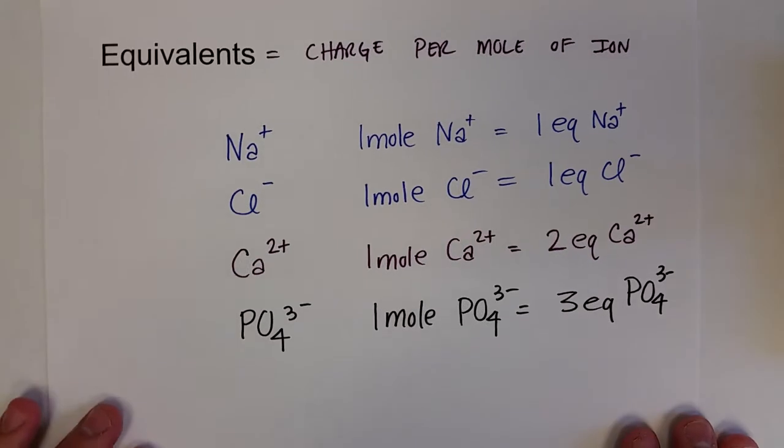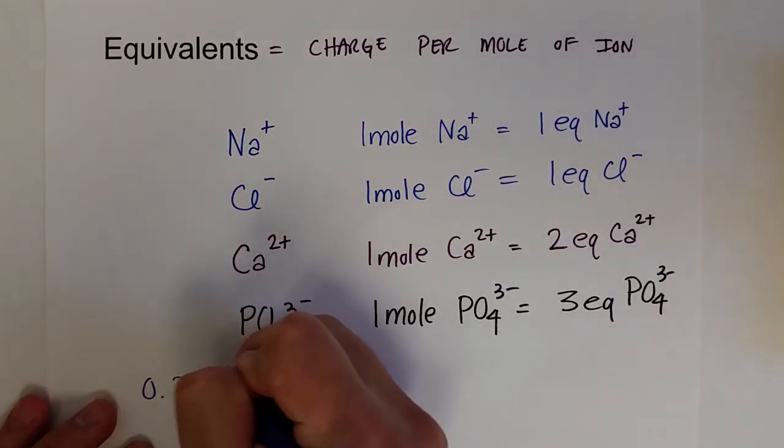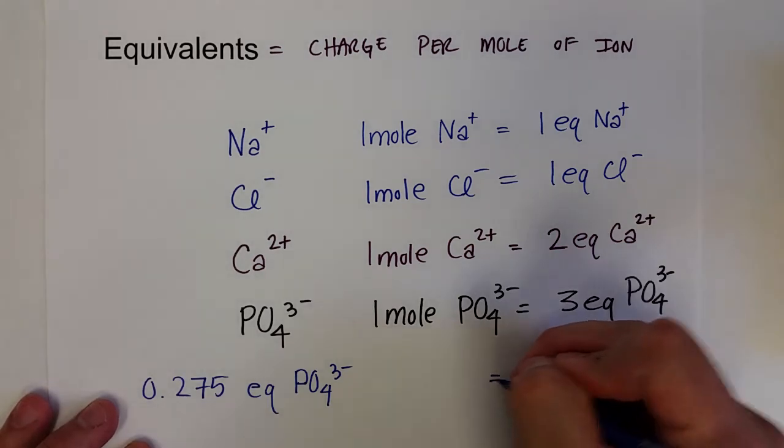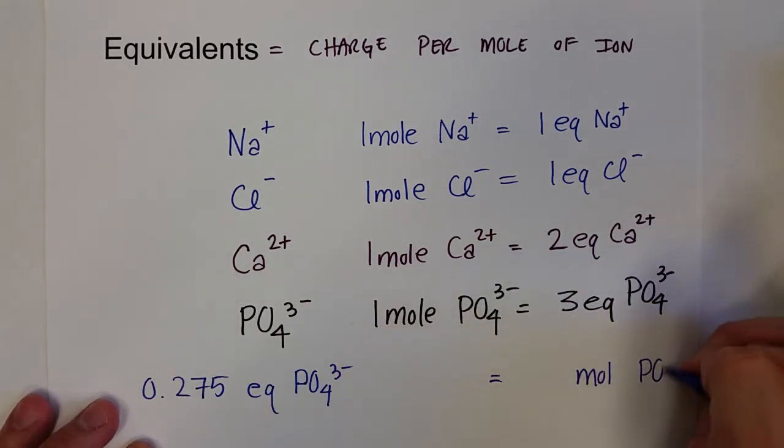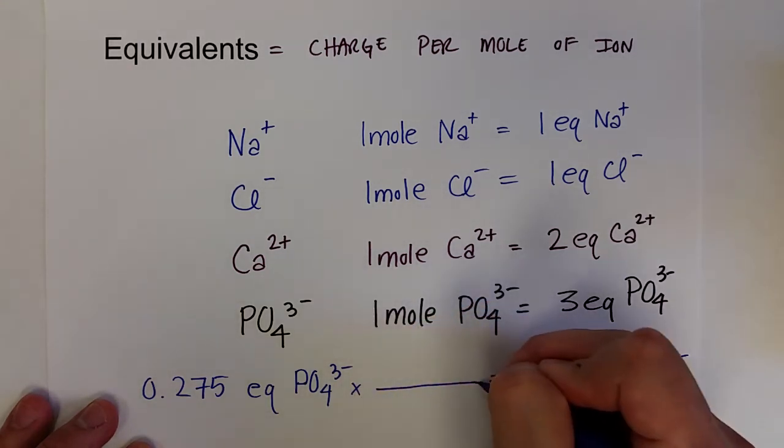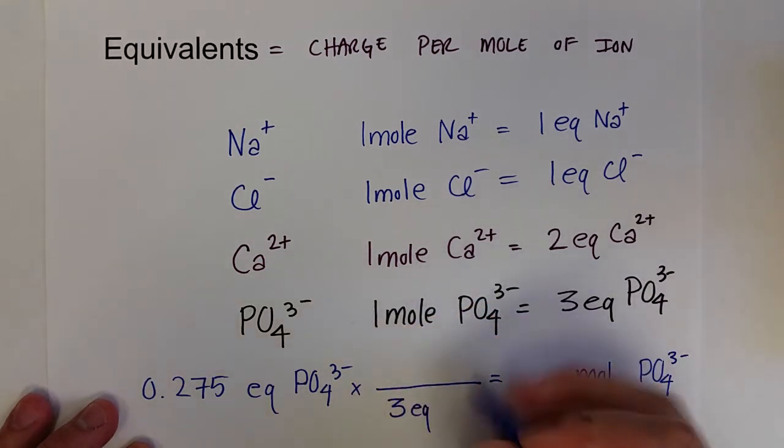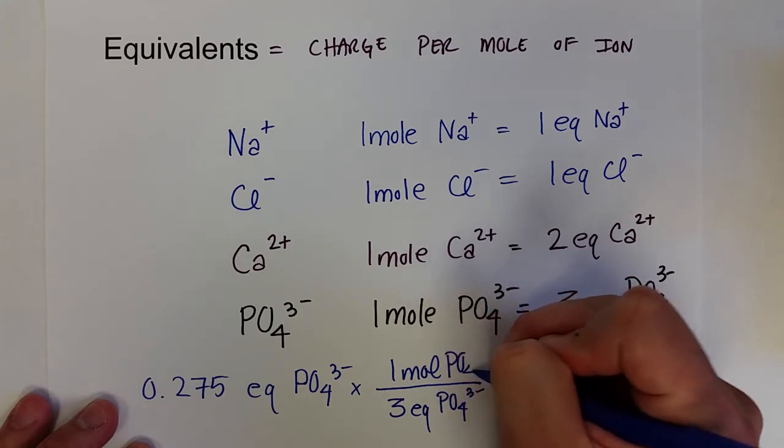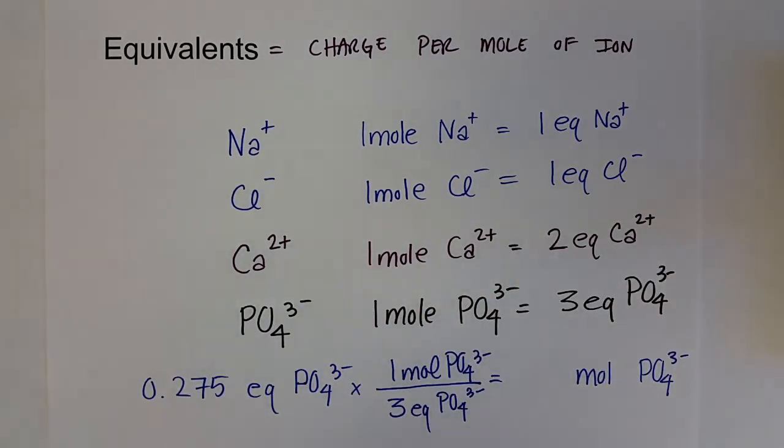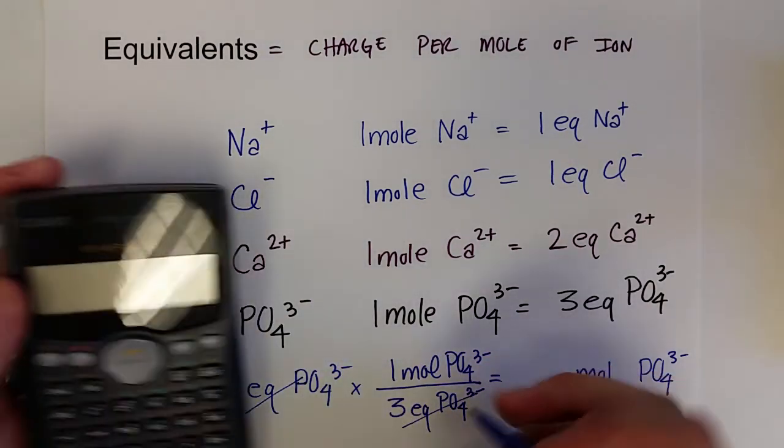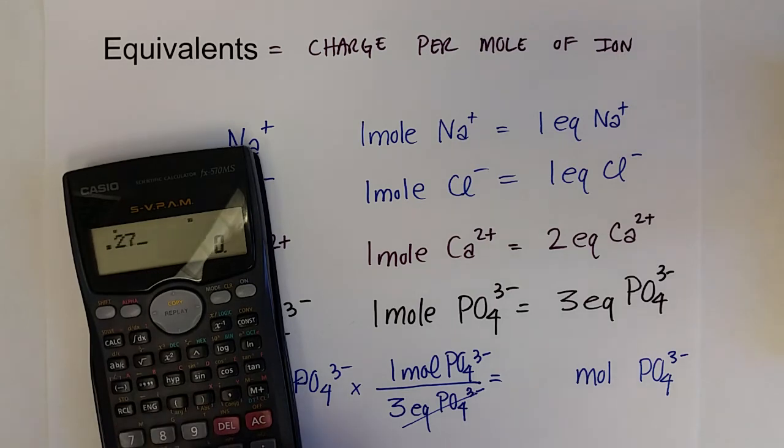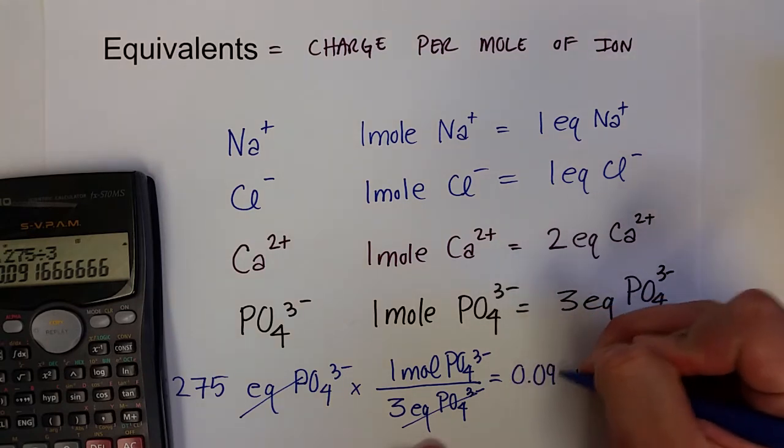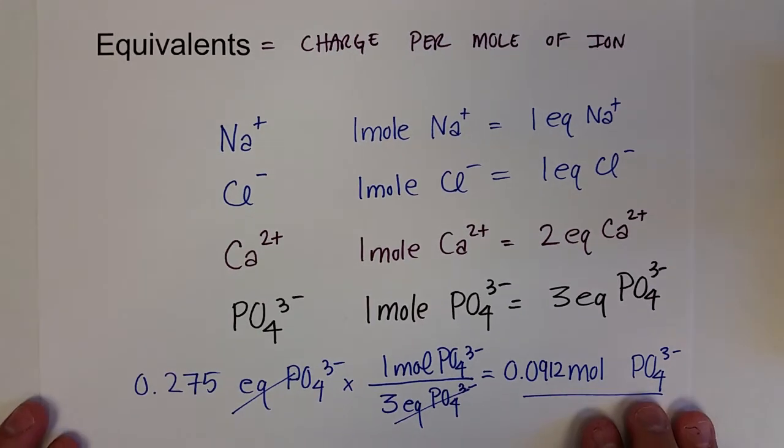So if we have a solution that contains 0.275 equivalents of phosphate, and we want to know how many moles of phosphate is present in that solution, we can multiply it by that equivalency. There are three equivalent charges for a phosphate for one mole of phosphate. And so we would just take that number, the equivalents cancel out. And so we would take 0.275 and divide that by three. And so we would know that we would have 0.0912 moles of phosphate with three significant figures.